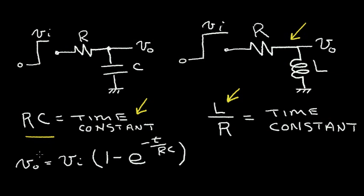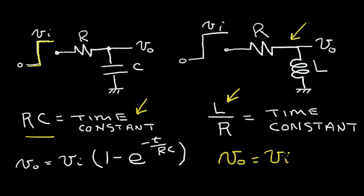In a previous video we presented the equation for the output voltage when we give a sharp voltage VI at the input. We determined that the output voltage was VI times 1 minus E raised to the minus T divided by the time constant. If we do the same for the RL circuit, we get V out equal to V in times E to the minus T divided by the time constant, which in this case is L divided by R.